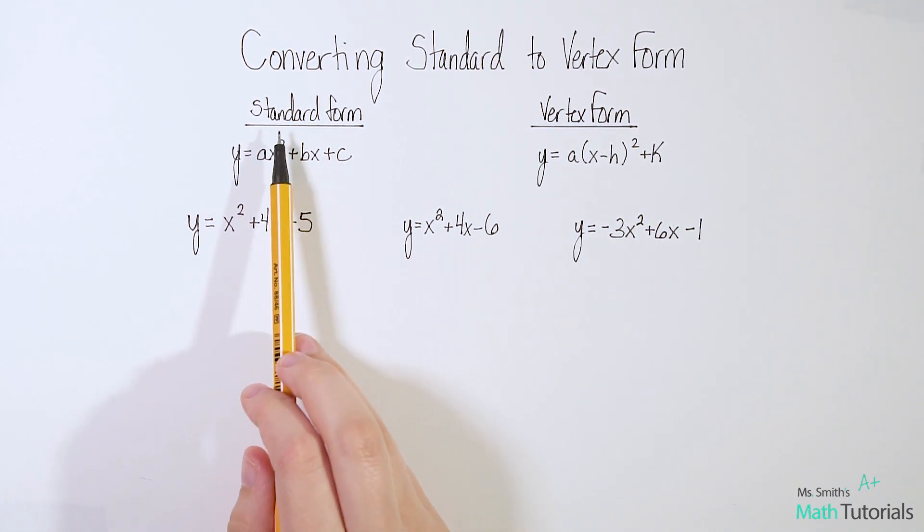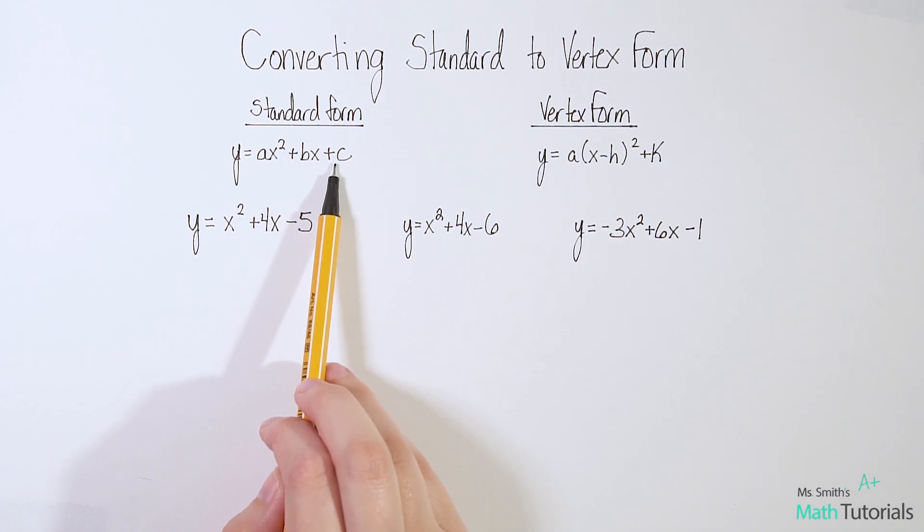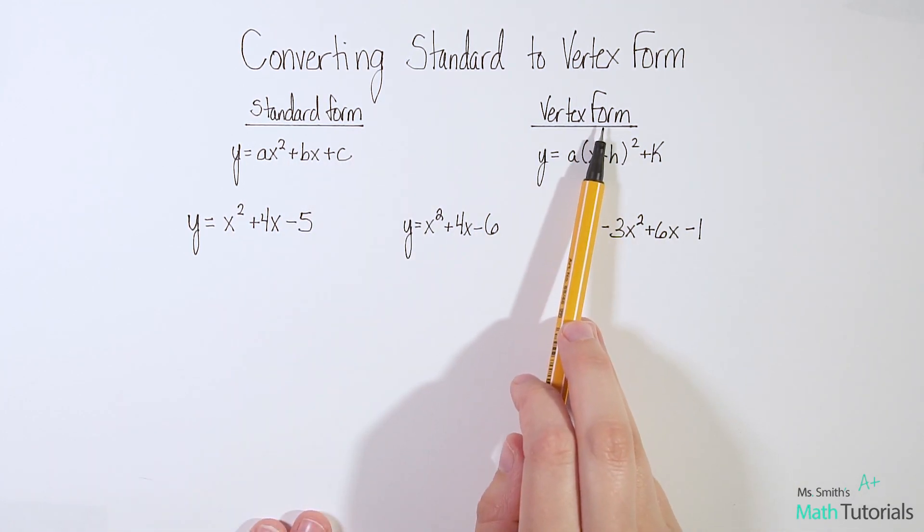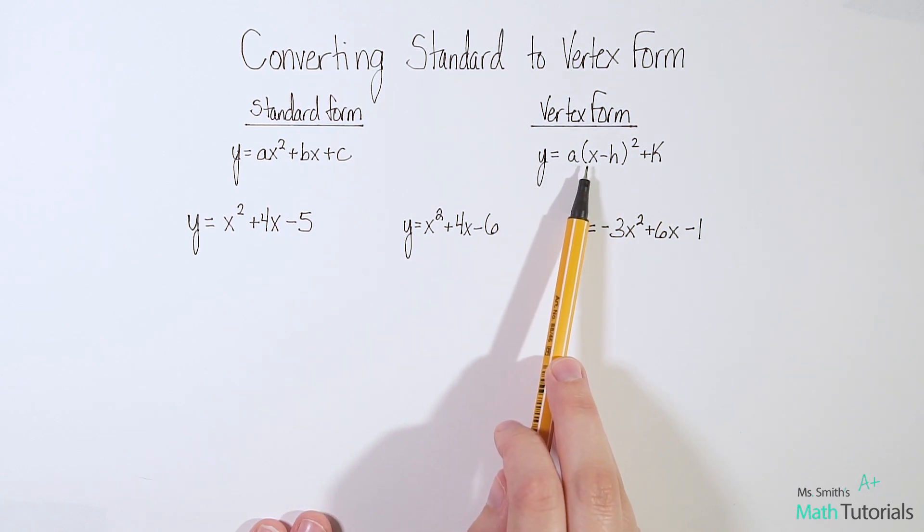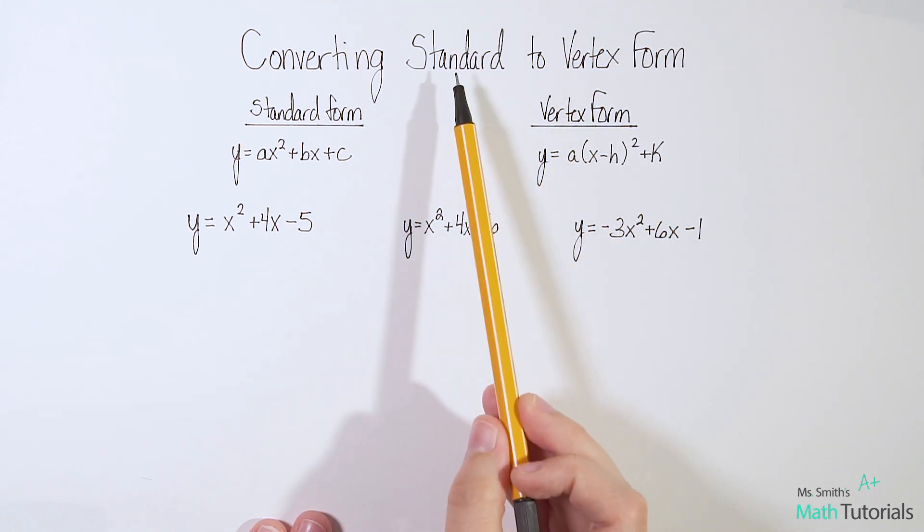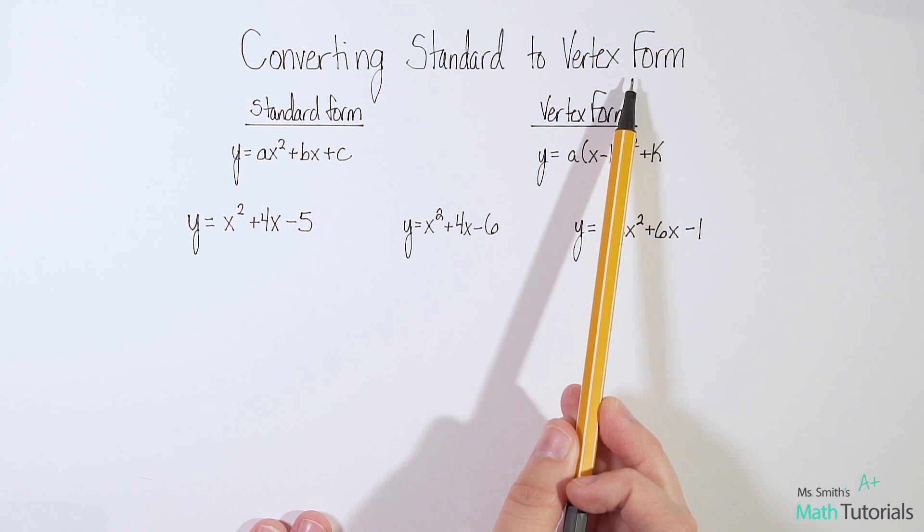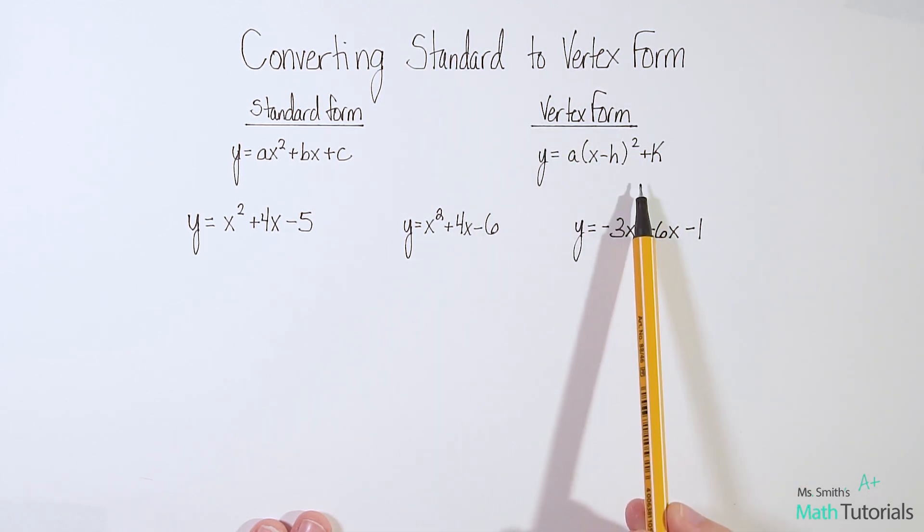As a quick reminder, standard form is y equals ax squared plus bx plus c. Vertex form of the same equation would be y equals a times x minus h squared plus k. I have a separate video on converting vertex to standard form, and another video where we just talk about vertex form in general. You definitely want to go back and watch those videos if you're not already familiar with those concepts.